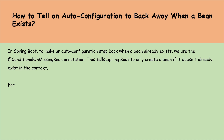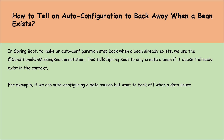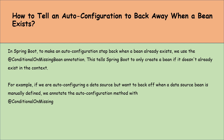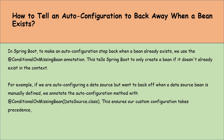For example, if we are auto-configuring a data source but want to back off when a data source bean is manually defined, we annotate the auto-configuration method with @ConditionalOnMissingBean passing the DataSource class. This ensures our custom configuration takes precedence and Spring Boot's auto configuration will not interfere if the bean is already defined.